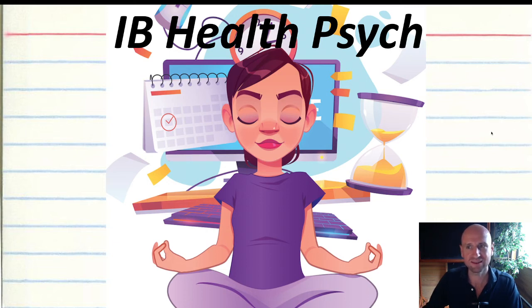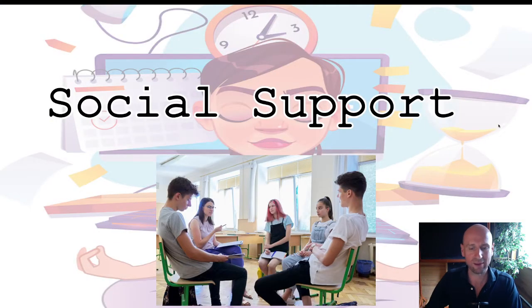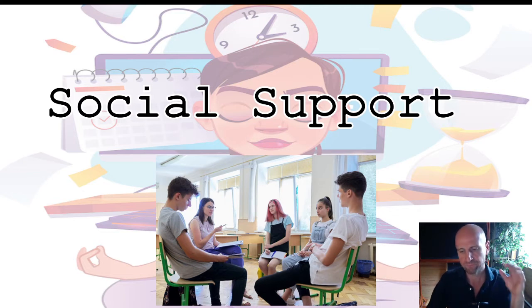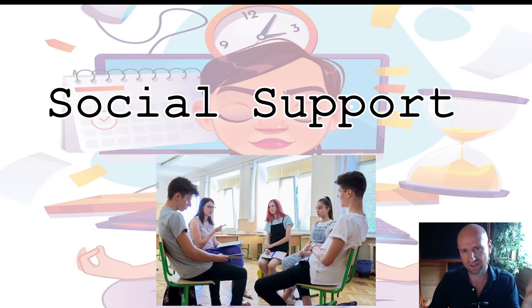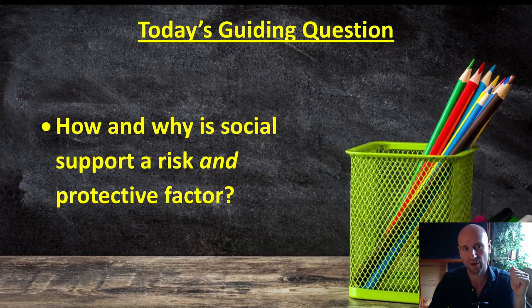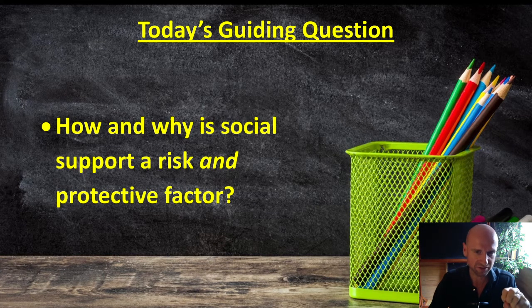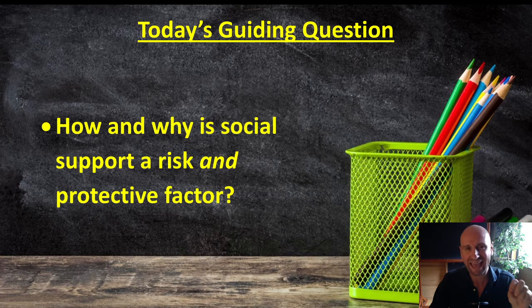G'day IB Psychologists. In this lesson on IB Health, we are looking at social support and its link with stress. We're trying to explain and understand why some people are more at risk for having high levels of stress than others — we're using stress as a health problem. Our guiding question: by the end of this tutorial, I hope you can answer how and why social support is a risk and a protective factor. This gives us another sociocultural explanation for high stress.